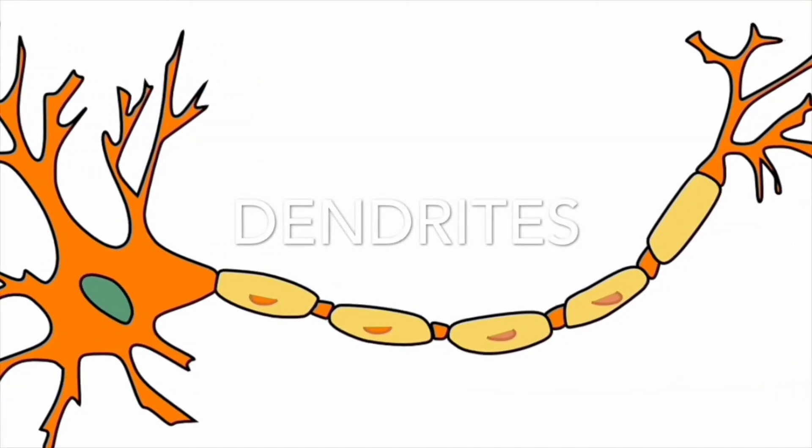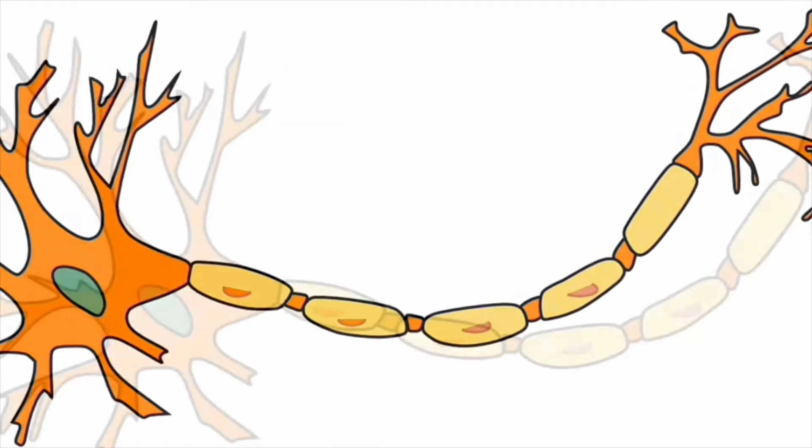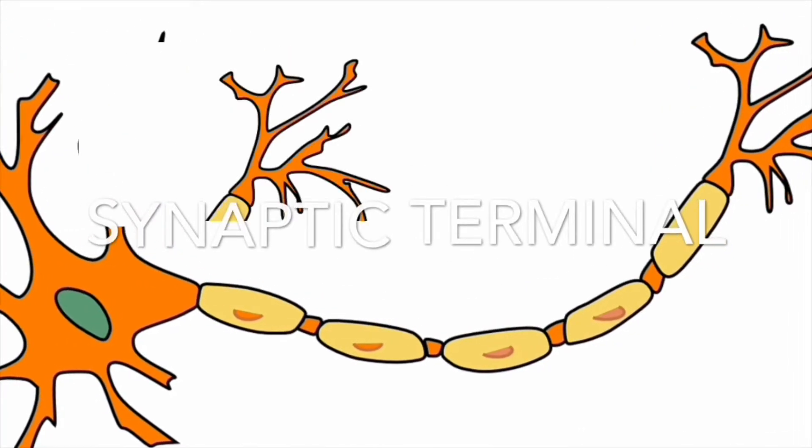There are four major parts of a neuron: dendrites, cell body also known as the soma, synaptic terminal, and axon.